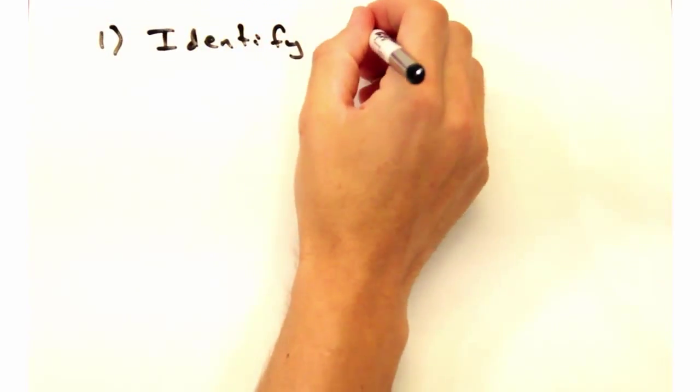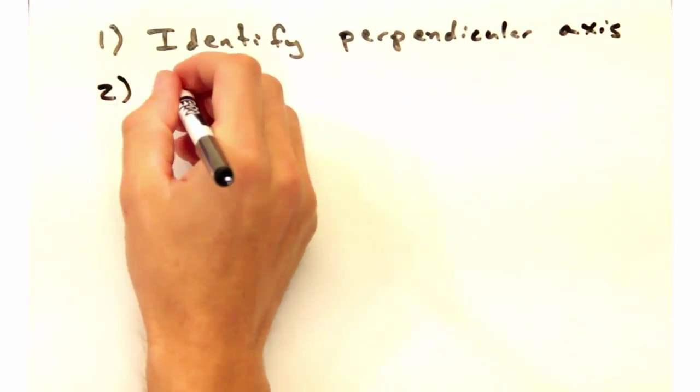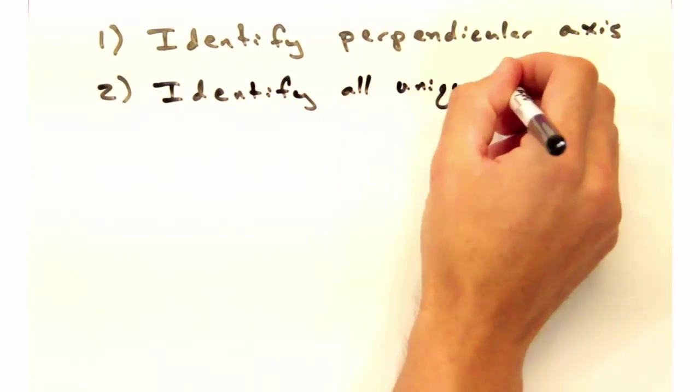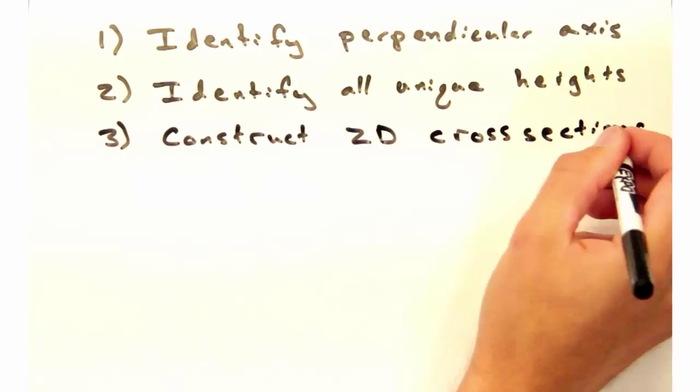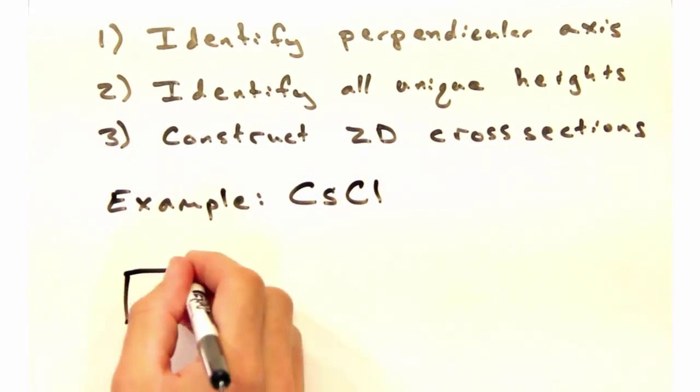So once we identify our perpendicular axis, we'll want to label all the atom locations in terms of height in A3. And once we know that, we can construct two-dimensional cross-sections at each of those heights.